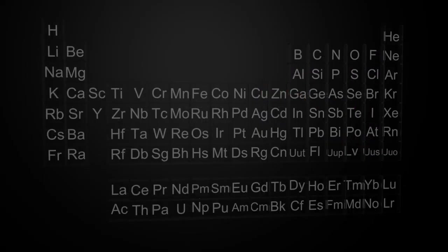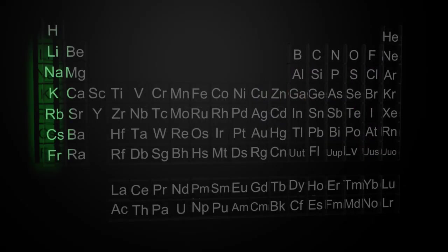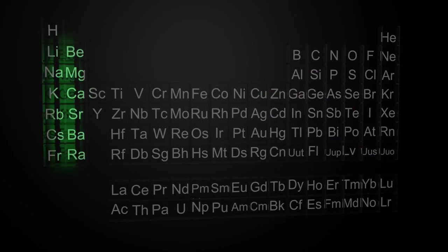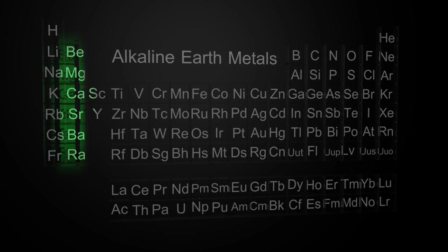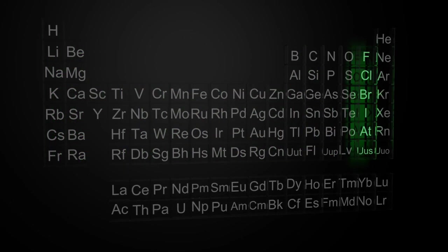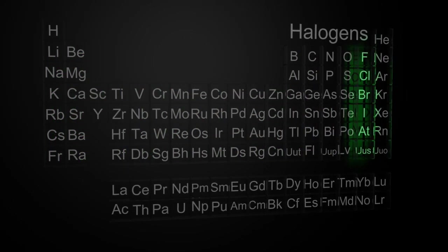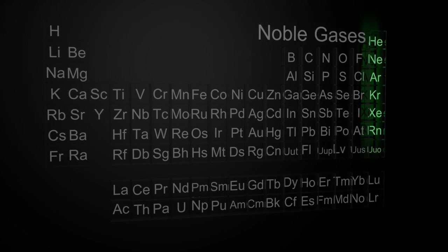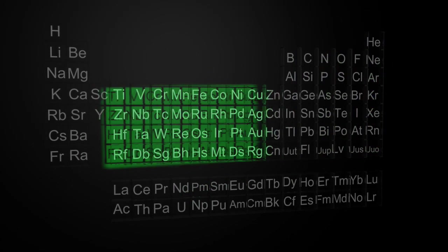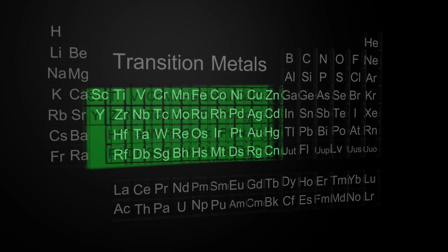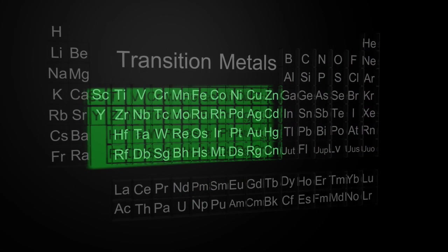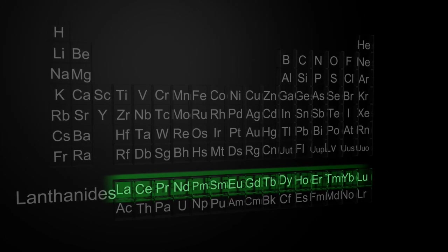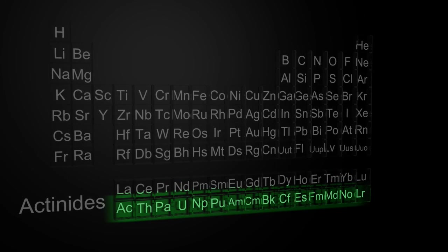You need to know the names of the alkali metals, alkaline earth metals, halogens, noble gases or inert gases. Those are the transition metals, the lanthanides, and finally the actinides, named after the first member.